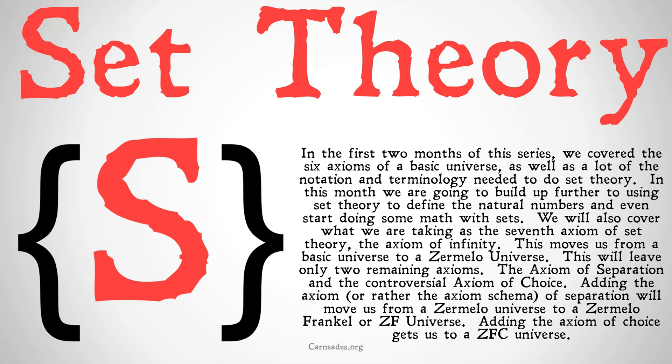In the first two months of this series, we covered the six axioms of a basic universe, as well as a lot of the notation and terminology needed to do set theory. In this month, we are going to build up further, using set theory to define the natural numbers and even start doing some math with sets. We're going to cover what we're taking as the seventh axiom of set theory — the axiom of infinity — in this month.